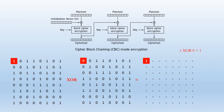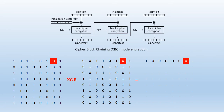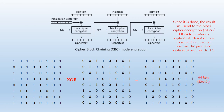Based on the example, the first bit of the result will be 1, the second bit will be 0, and the third bit will be 0. The operation will continue for all the remaining bits. Once it is done, the result is sent to the block cipher encryption to produce a cipher text.